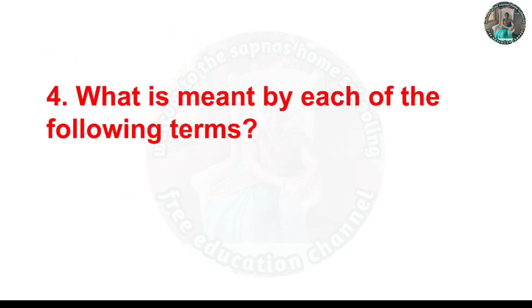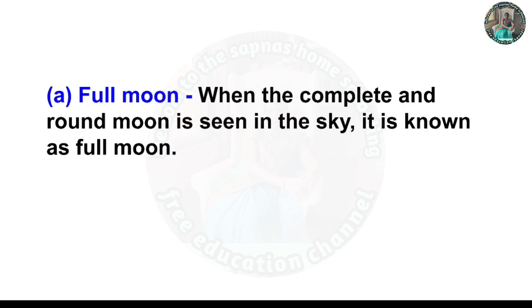Question four: What is meant by each of the following terms? A) Full Moon: When the complete and round moon is seen in the sky, it is known as full moon.